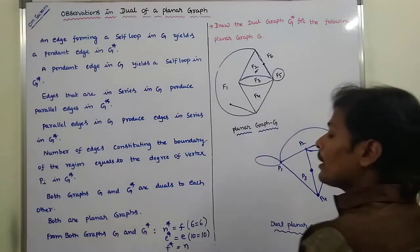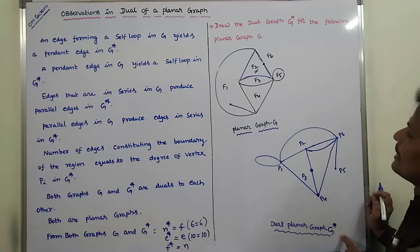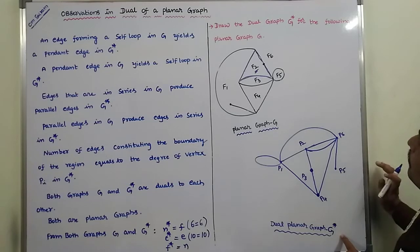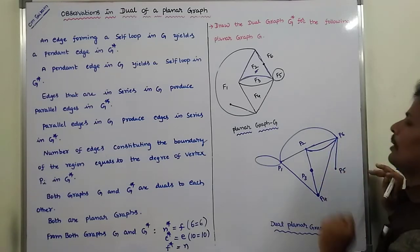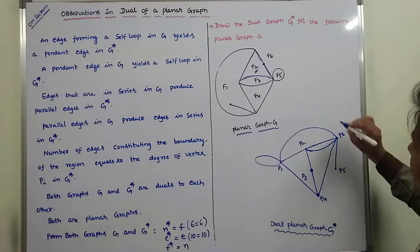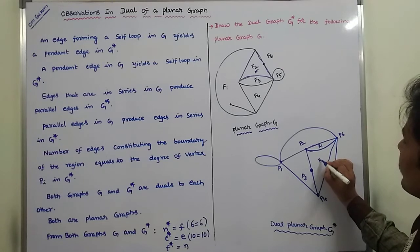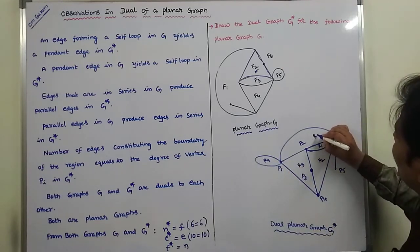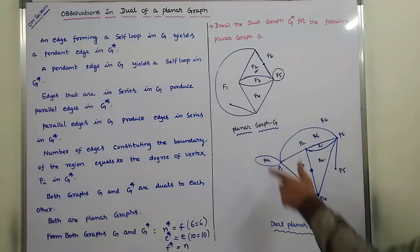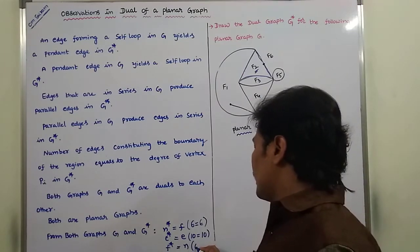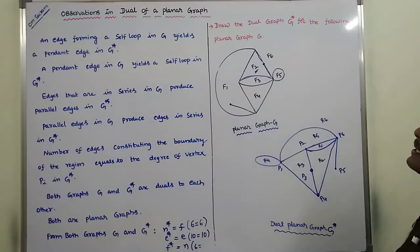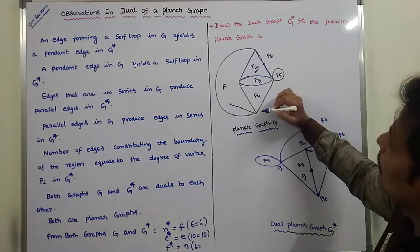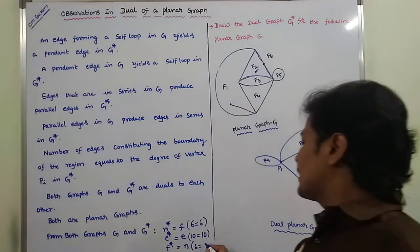Additionally, F star equals N. The number of regions in G star is 6: R1, R2, R3, R4, R5, and R6. The number of vertices in G is also 6. So 6 equals 6, meaning the number of regions in G star equals the number of vertices in G.